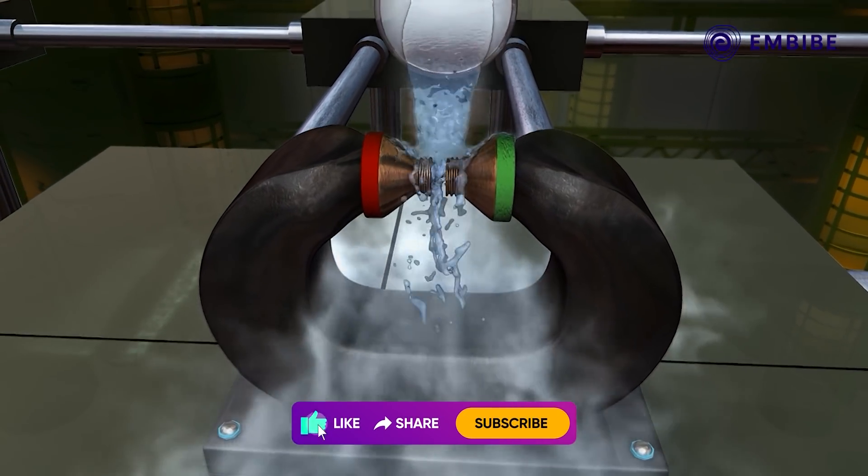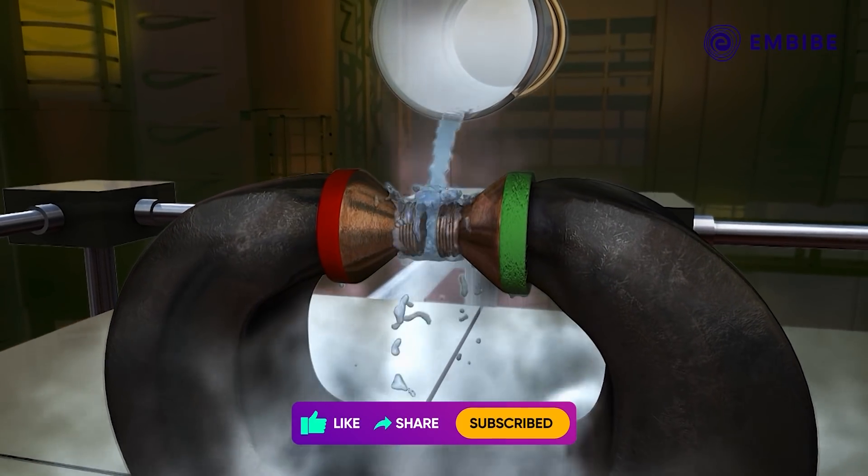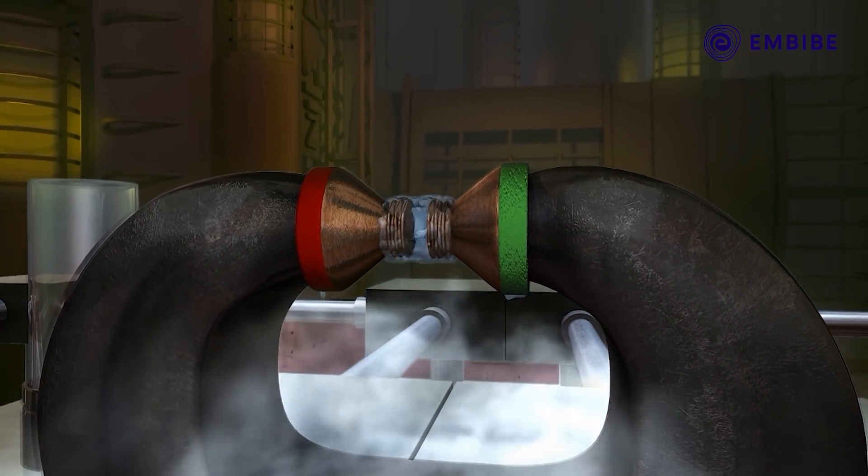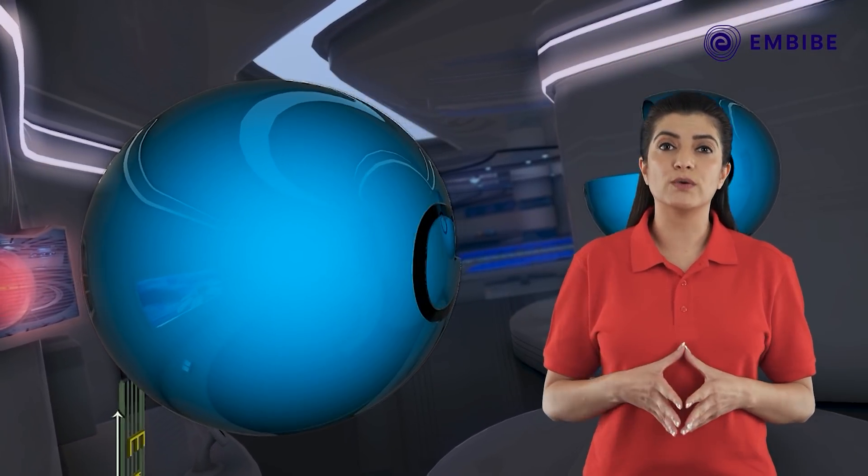This means if liquid oxygen is poured over a horseshoe magnet, it remains suspended between the poles. To understand this, let us actually build the MO diagram of the oxygen molecule.